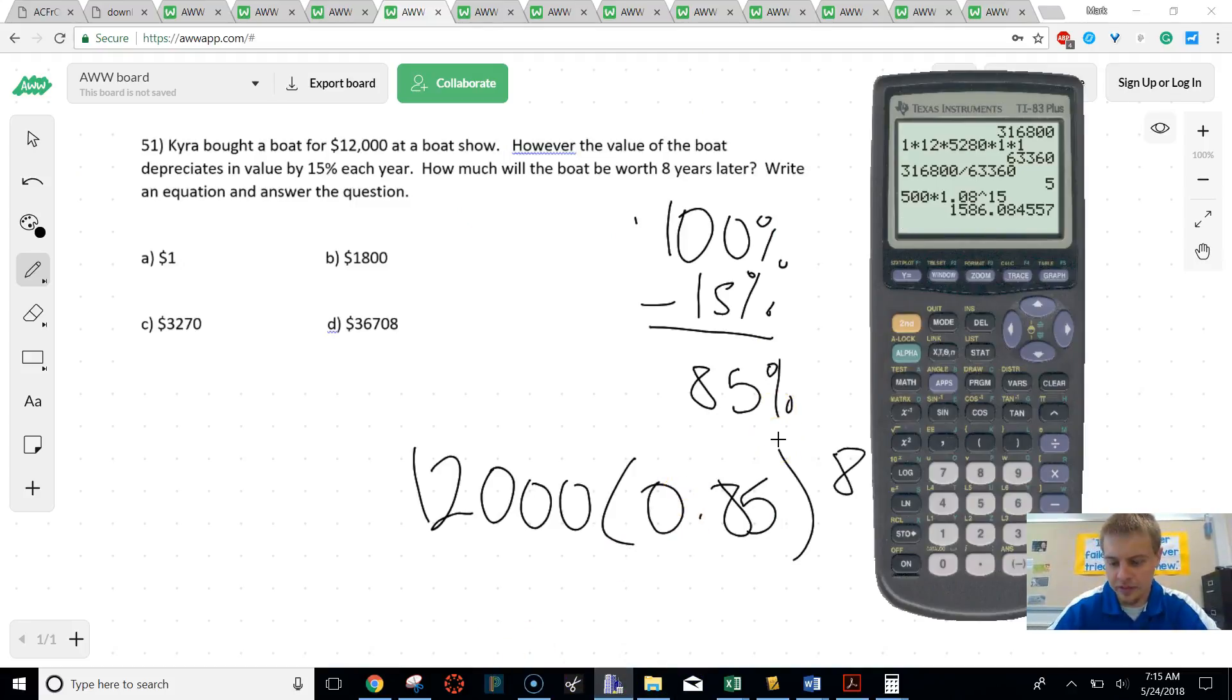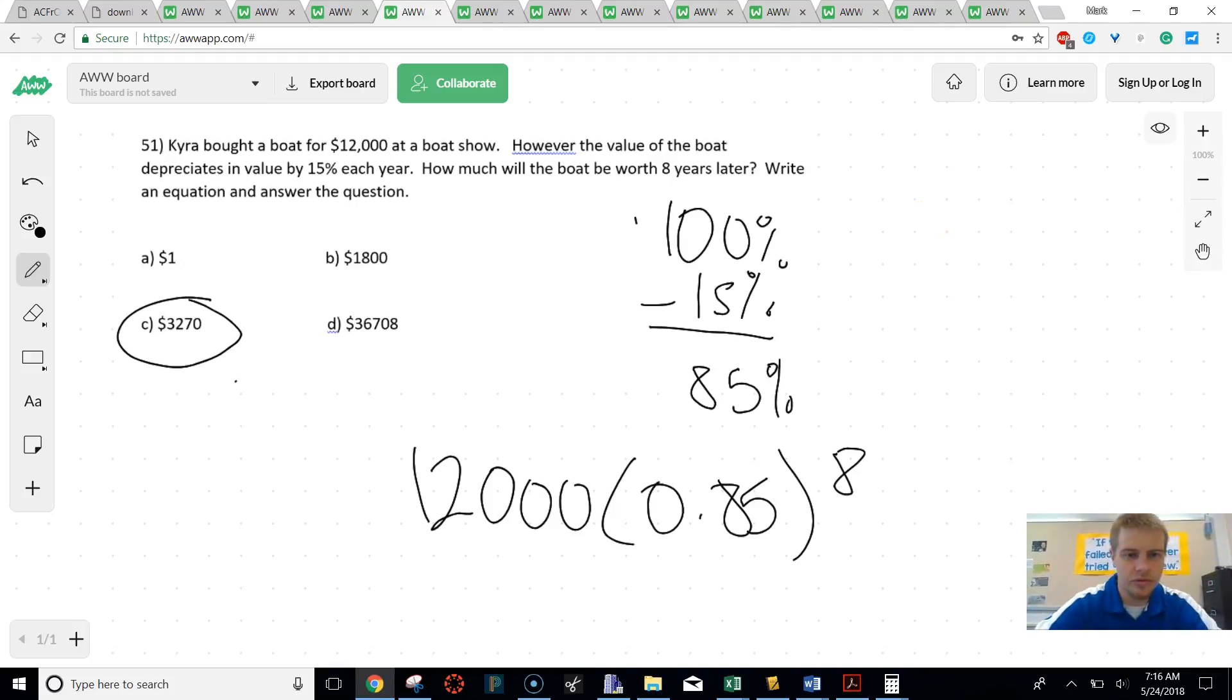So we're going to plug that into our calculator. And what we're going to end up getting is 3,200, and this rounds up to about 70. So C is our closest answer.